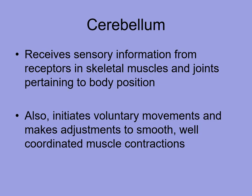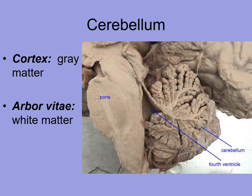The cerebellum receives sensory information from various receptors — such as from your skeletal muscles and joints — helping you to be aware of your body position, and it helps to initiate voluntary movements and make adjustments for smooth, well-coordinated muscle contractions. Interestingly, the cortex — the outermost area — has gray matter, just like the cerebrum, and deep to that is white matter. The way it looks is almost like a tree with little branches, and so it is referred to as the arbor vitae, a very classic feature seen during dissection of the cerebellum.